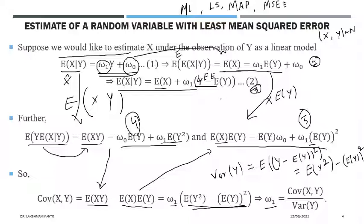Knowing the joint distribution of X and Y — or having a prior distribution of X — allows us to compute omega_1 and then omega_0. Substituting all these back, we see the conditional expectation as a linear function of Y with known values of omega_0 and omega_1. This is the approach to estimate a random variable with least mean square error.